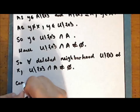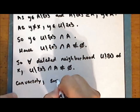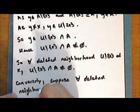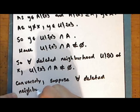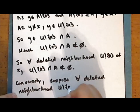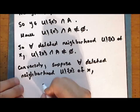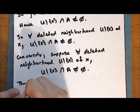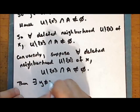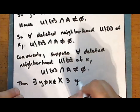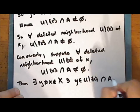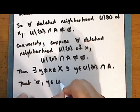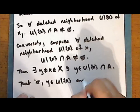Conversely, suppose that for every deleted neighborhood U set minus the singleton containing x of the point x, we have that the intersection of this deleted neighborhood with the set A is not empty. Then there exists at least one point y distinct from the point x in the space X, such that this point y is in the intersection — that is, the point y is in the deleted neighborhood of the point x and the point y is in the set A.